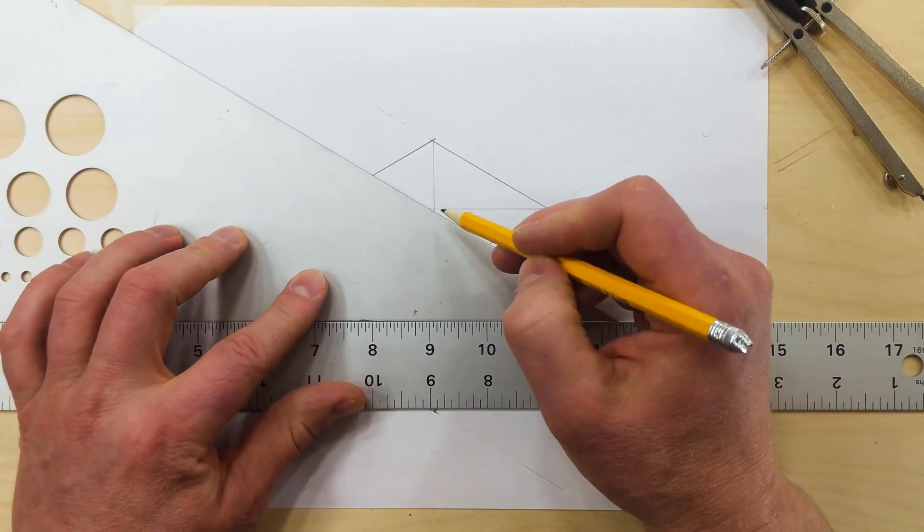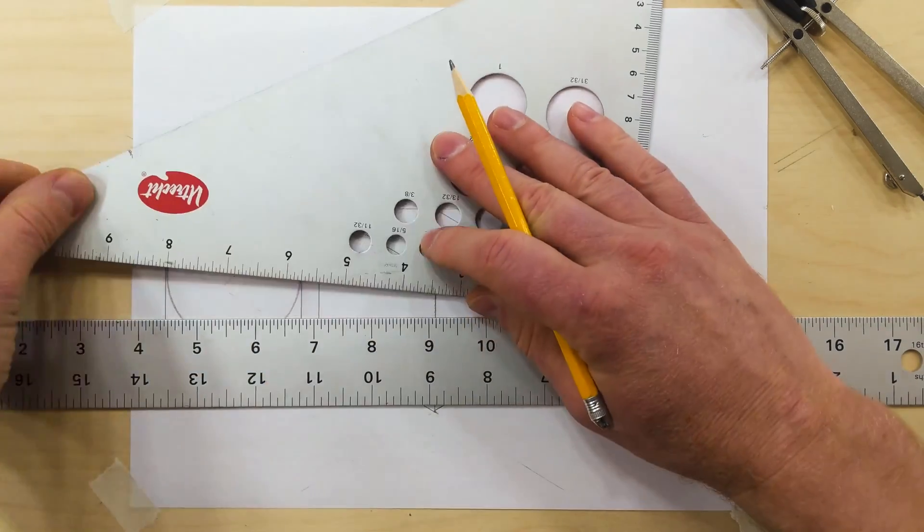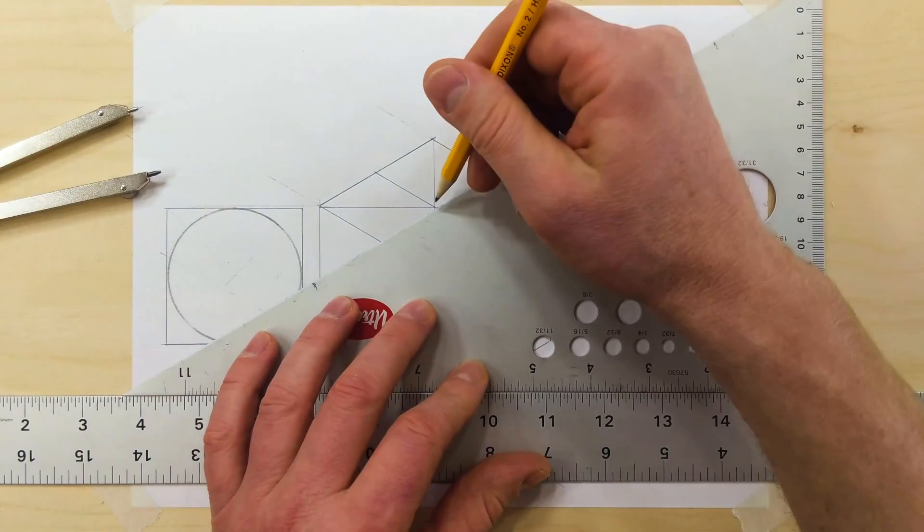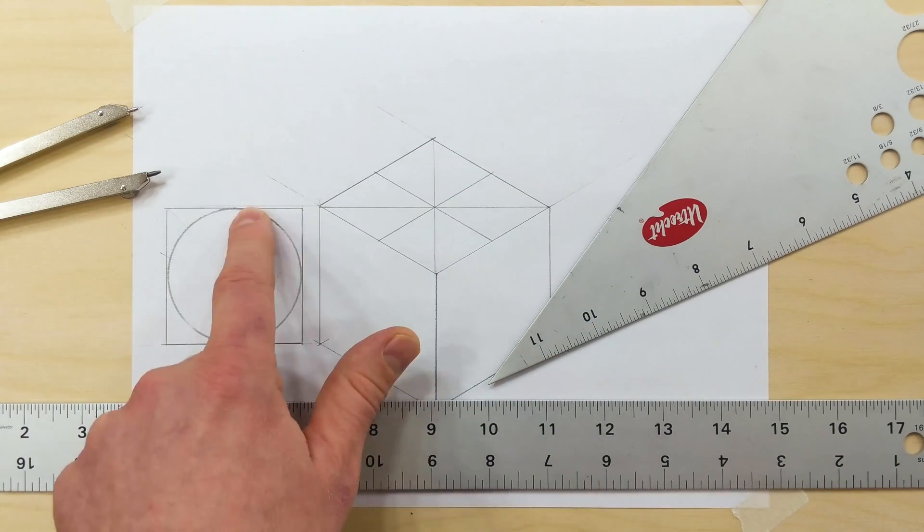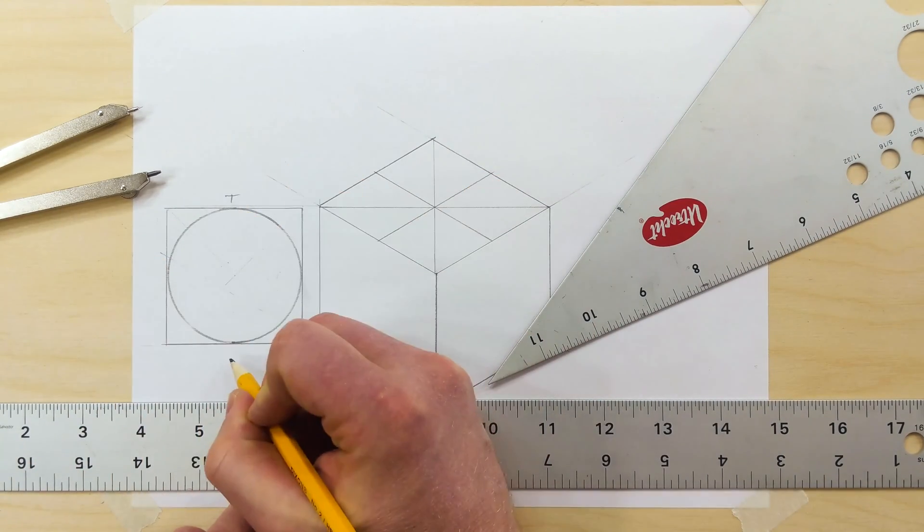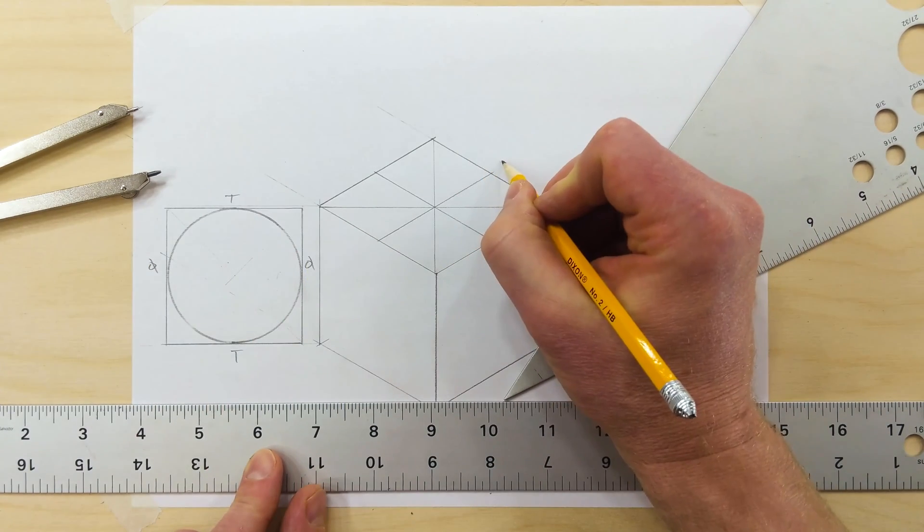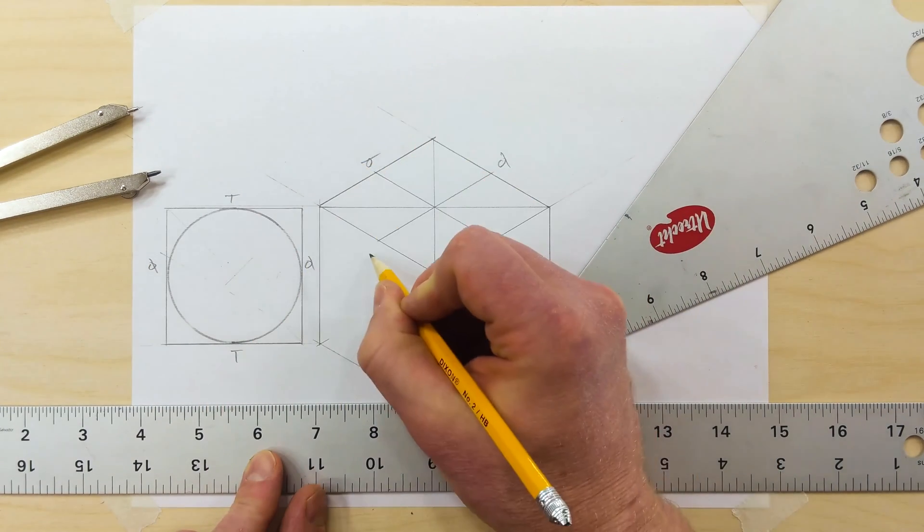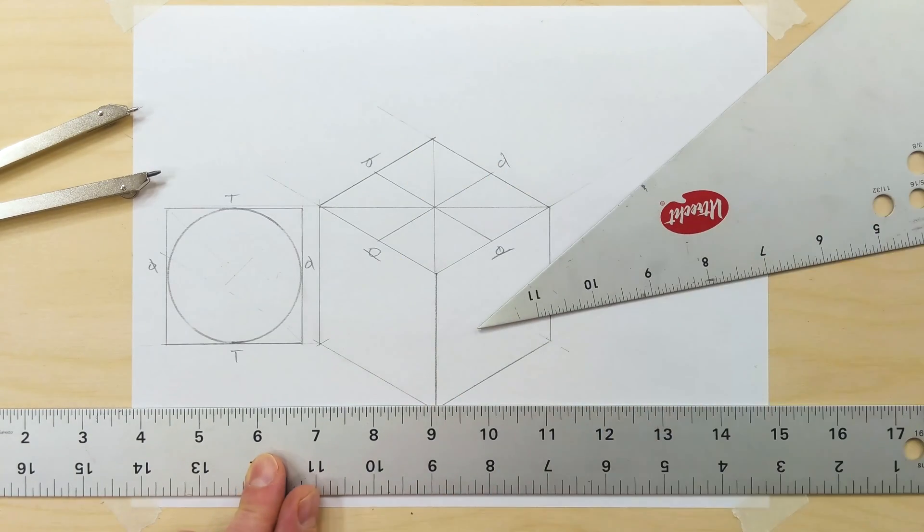Now we need to draw parallel lines through this midpoint. You can use your 30-60 triangle to draw these parallel lines. Now, these points are the same as these four points. These are tangent points. You can mark them with a T or write the tangent symbol with a circle and a line. Each of these are going to be tangent points of our circle.